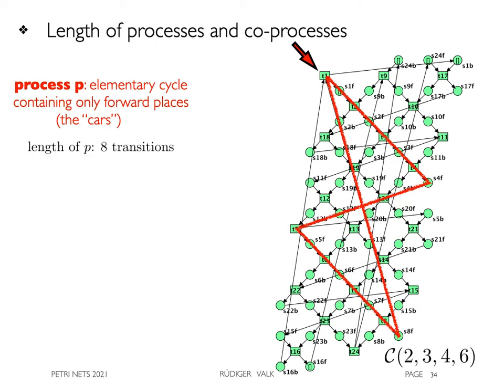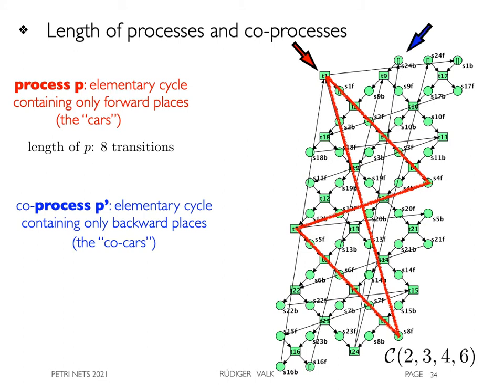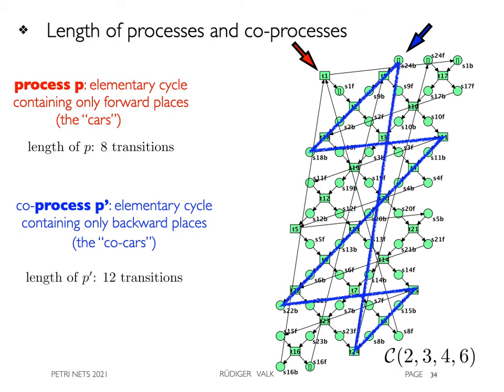In the same way, a co-process is an elementary cycle containing only backward places, modeling the co-cars, with a length of 12 transitions here.